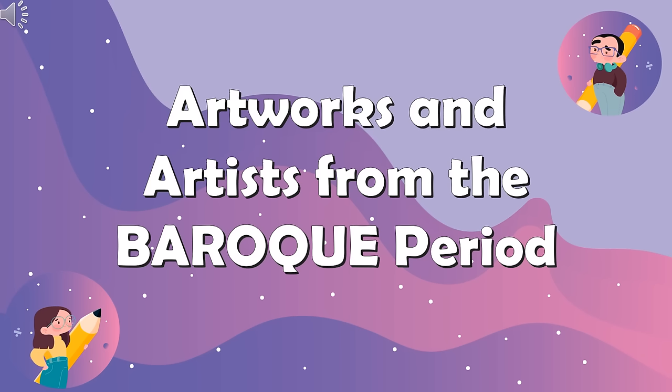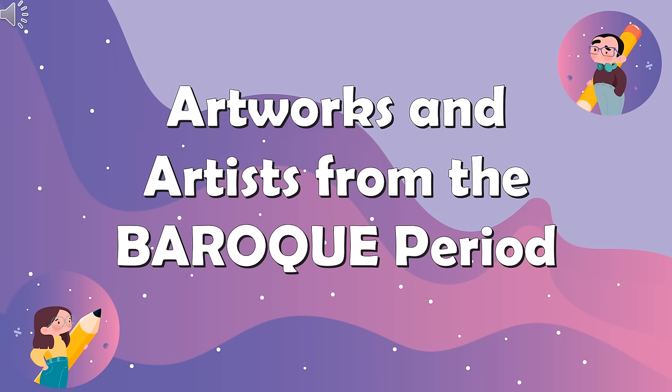Now let's proceed to the artworks and artists from the Baroque period. The Baroque art period started in the year 1600 and lasted up to 1800. The term Baroque was derived from the Portuguese word Baroco, which means irregularly shaped pearl or stone. Baroque developed in Europe around the 1600s. Baroque art aims to give an effect that wants to carry the viewers away with the force of its impact. In the 16th century, the Baroque style was carried by the Spanish and Portuguese to the Philippines, influencing the Intramuros, which is the pre-colonial walled city of Manila.